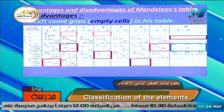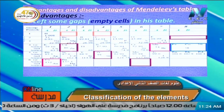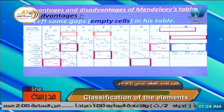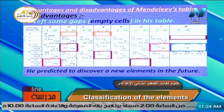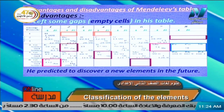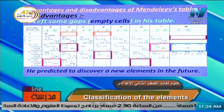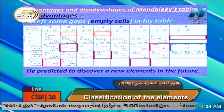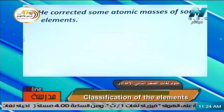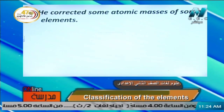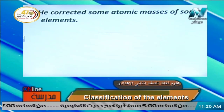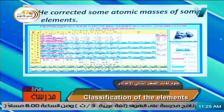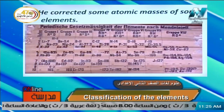Mendeleev left empty cells in his table, as you can see, predicting new elements to be discovered in the future. Advantage number two: he corrected some atomic masses of some elements. We know atomic masses means atomic weights or mass numbers. So Mendeleev corrected some atomic masses of certain elements in his table.